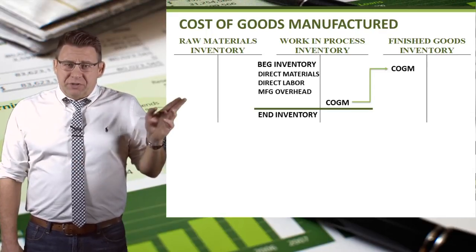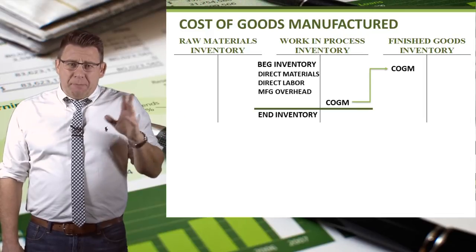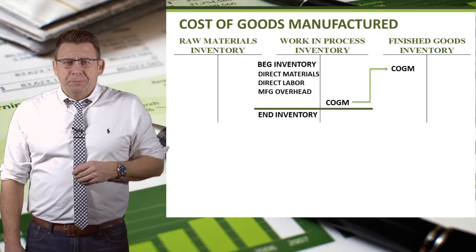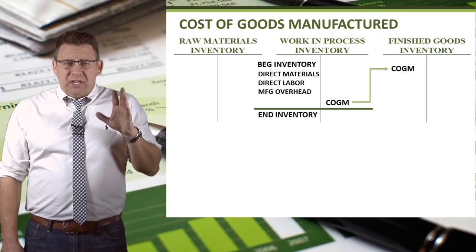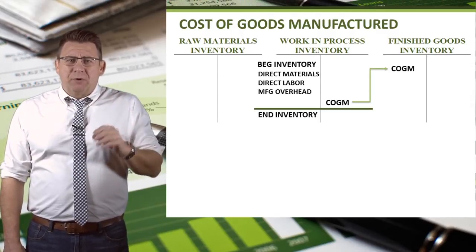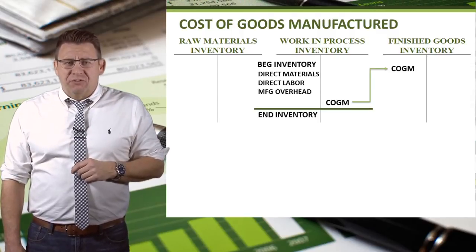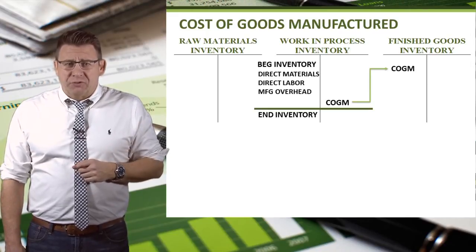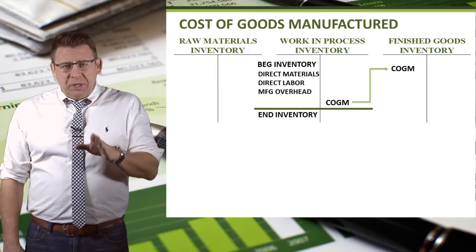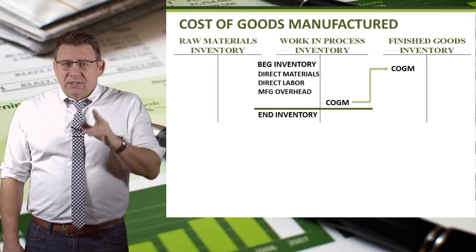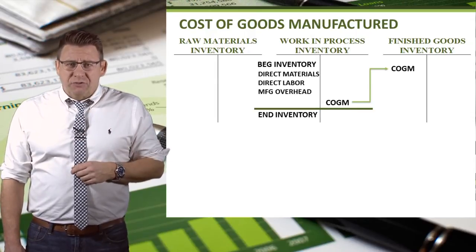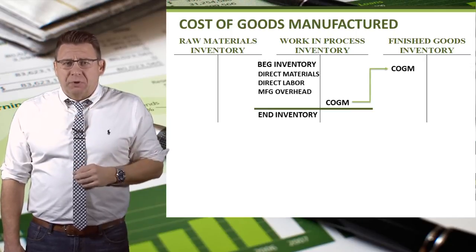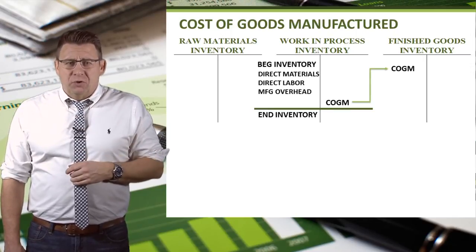Direct materials, direct labor, and manufacturing overhead are added to beginning inventory. These items together represent everything we can manufacture for the period. There are only two things we can do with our manufacturing costs: we can complete products, which we call the cost of goods manufactured, or we can still have them as partially completed products, which we call ending inventory.